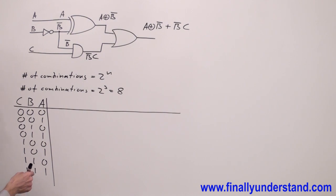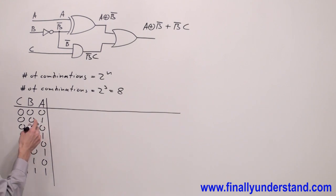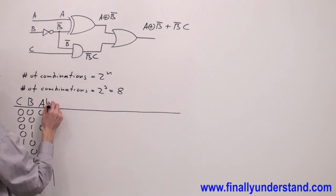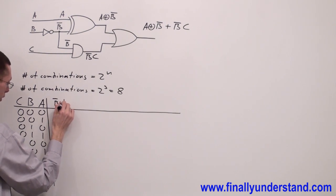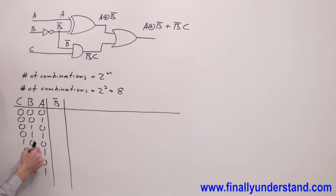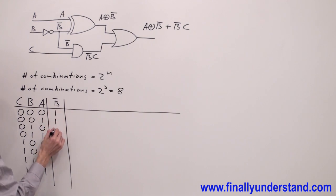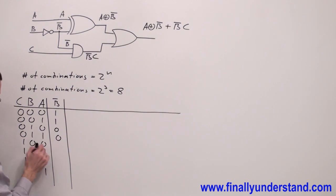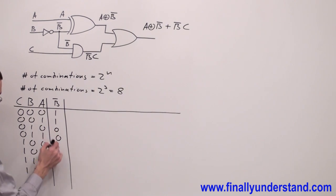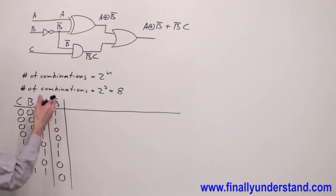Next, I'm supposed to draw the columns for expressions other than A, B, C. I have B', so I'm going to write a column for the complement of B. Because B' is the complement of B: where B is 0, B' is 1; where B is 1, B' is 0. I now have the column for B'.